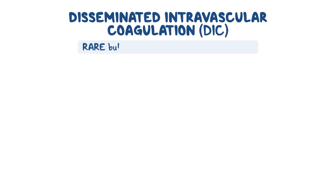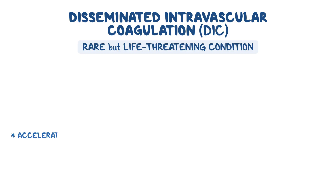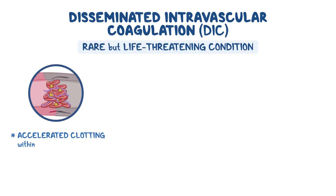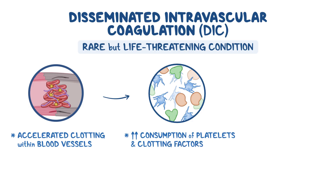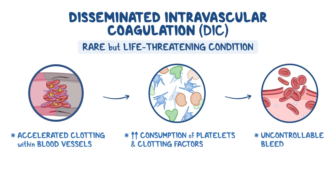Disseminated intravascular coagulation, or DIC for short, is a rare but life-threatening condition. It is characterized by accelerated clotting within blood vessels, which in turn leads to increased consumption of platelets and clotting factors, which can ultimately result in uncontrollable bleeding.